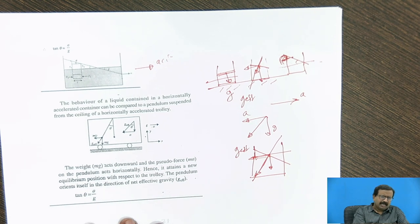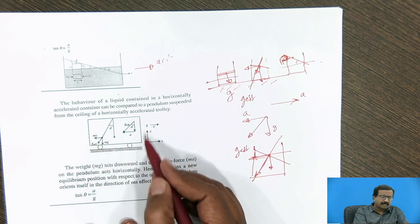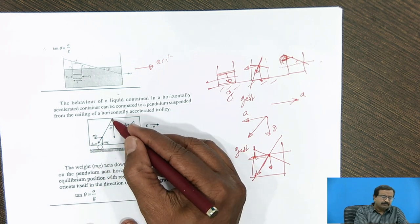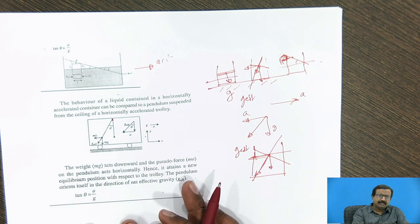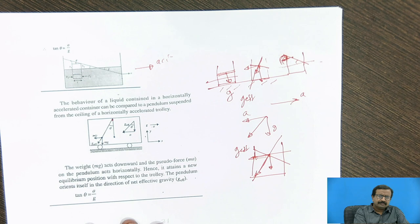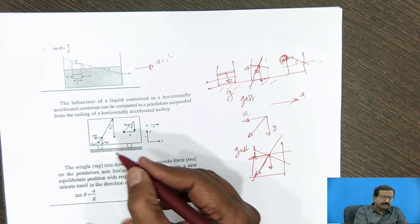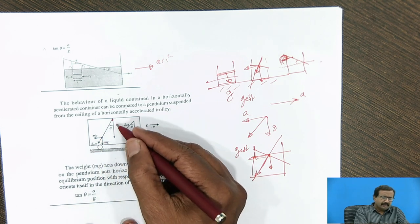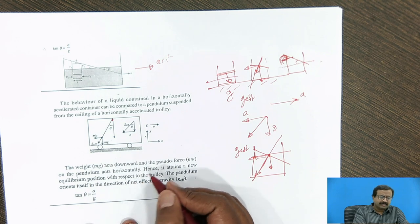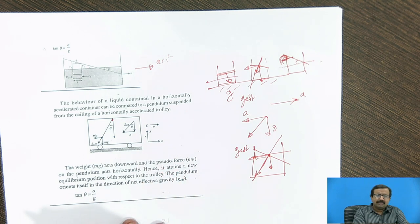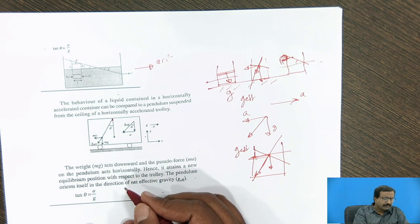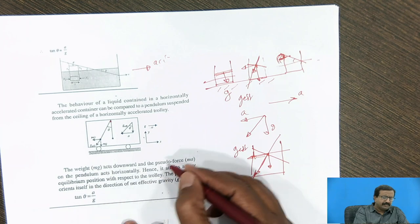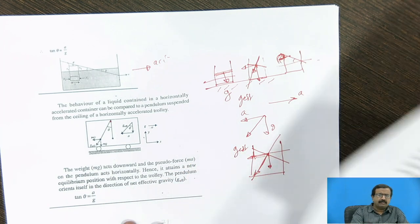This is analogous to a pendulum in an accelerating vehicle. When the vehicle moves forward, the pendulum swings backward due to the pseudo-force. The effective acceleration gives the angle of deflection. For our fluid problem, tan θ = A/G. Let us now see how this relation is derived.